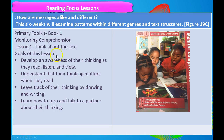Your Primary Toolkit is a great resource for monitoring comprehension — our main lead standard being Figure 19C. Lesson 1 is about monitoring comprehension. It talks about developing awareness of thinking while reading, listening, and viewing; understanding how thinking matters when reading; keeping track of thinking by drawing and writing; and learning to turn and talk to a partner about their thinking. This fits very nicely into the 3 kinds of thinking, making it a great focus lesson to do with students.